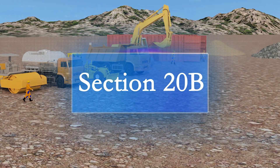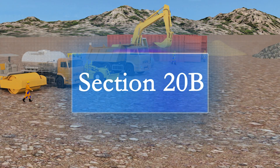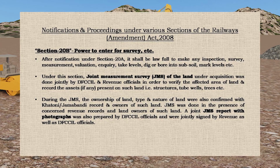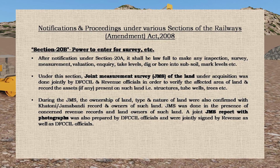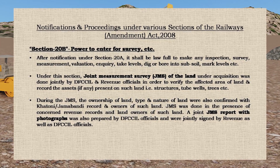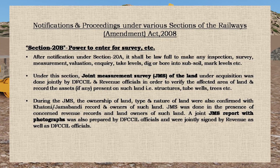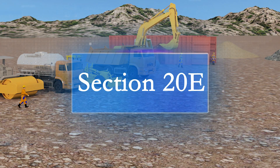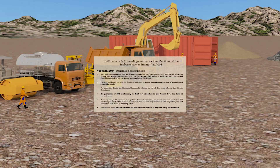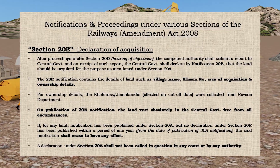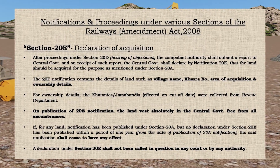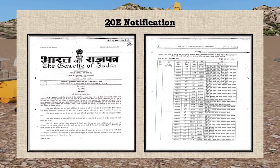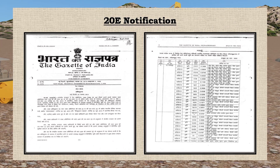Section 20B: Under this section, a joint measurement survey of the land under acquisition was done jointly by DFCCIL and revenue officials. Section 20E: The 20E notification contains details of land such as village name, khasra number, area of acquisition, and ownership details.